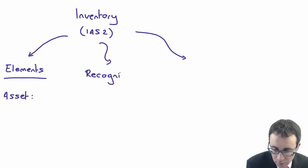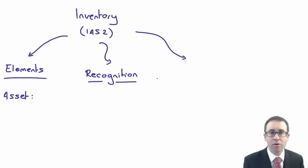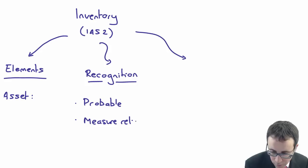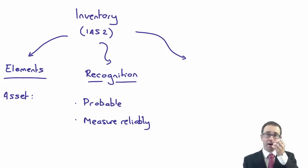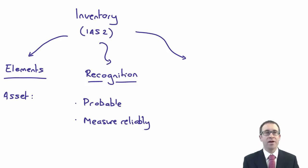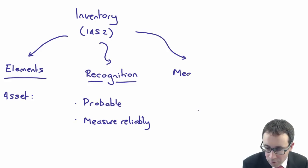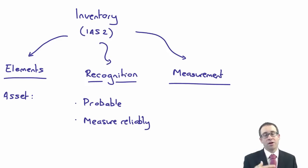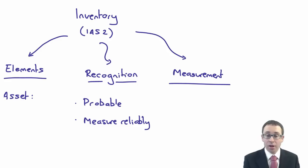Thinking about the recognition of inventory: there are two points — probable future economic benefits and reliable measurement. Is there a probable inflow of economic benefit? Is it more likely than not that you'll be able to sell that inventory and generate a profit? Yes. Can you measure the cost reliably? Yes — you have an invoice showing the amount paid. Then thinking about measurement: what measurement principles do we use for inventory? It's the lower of cost and net realisable value — and you can tie that back into the measurement element of the framework.